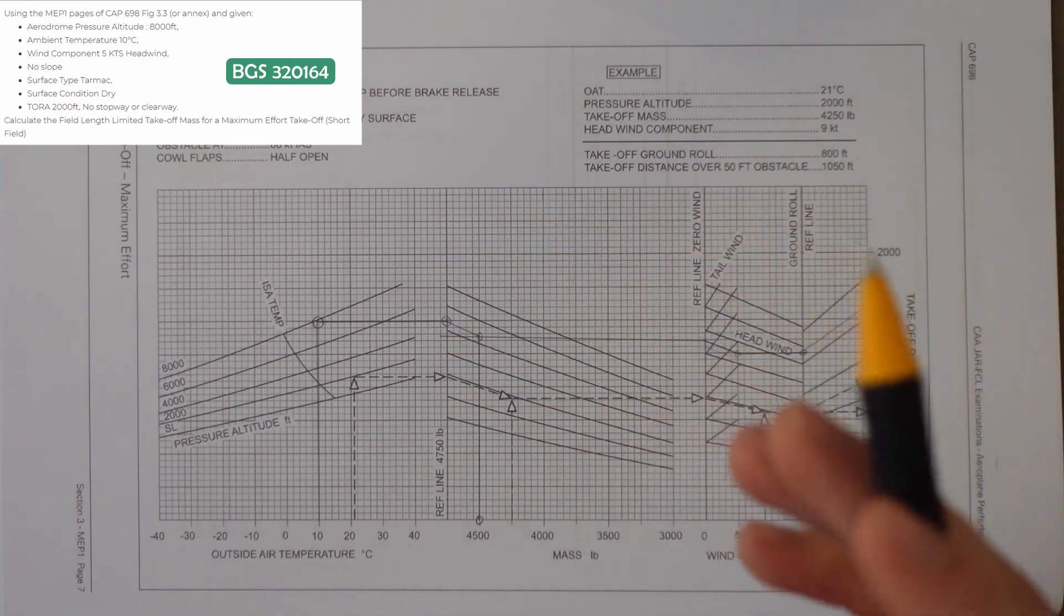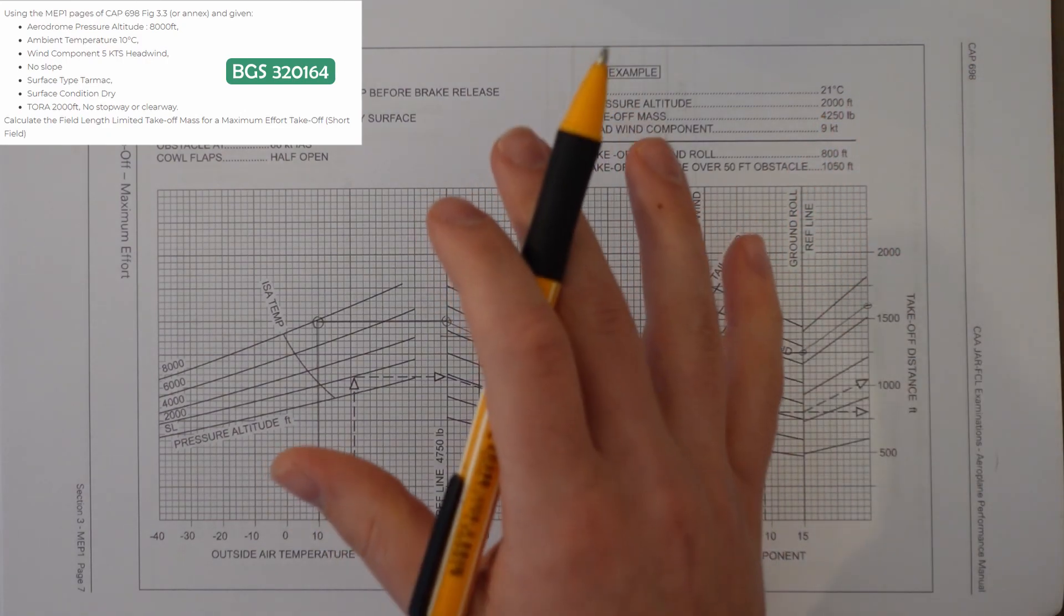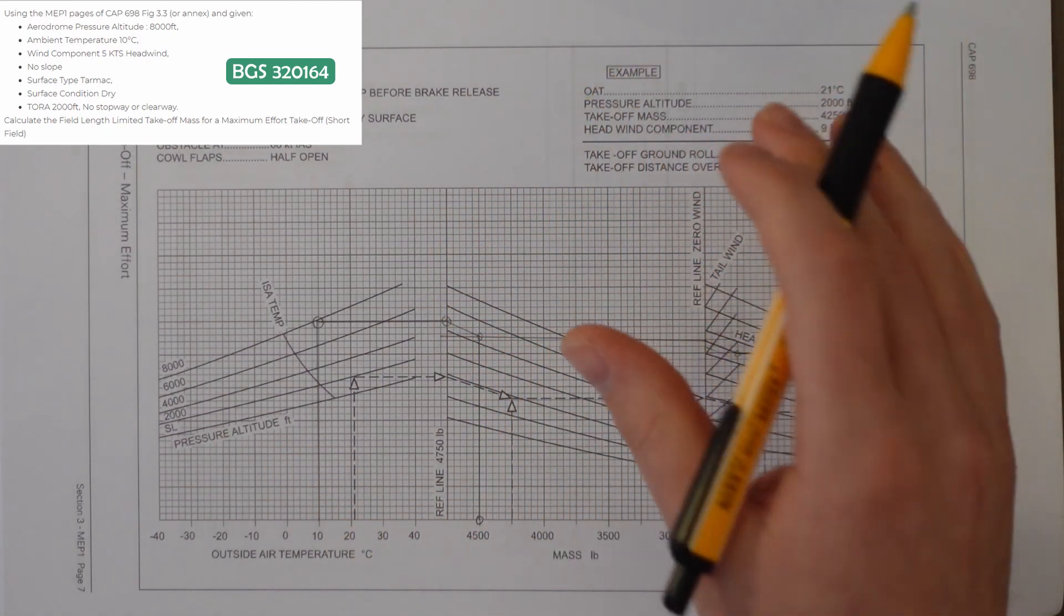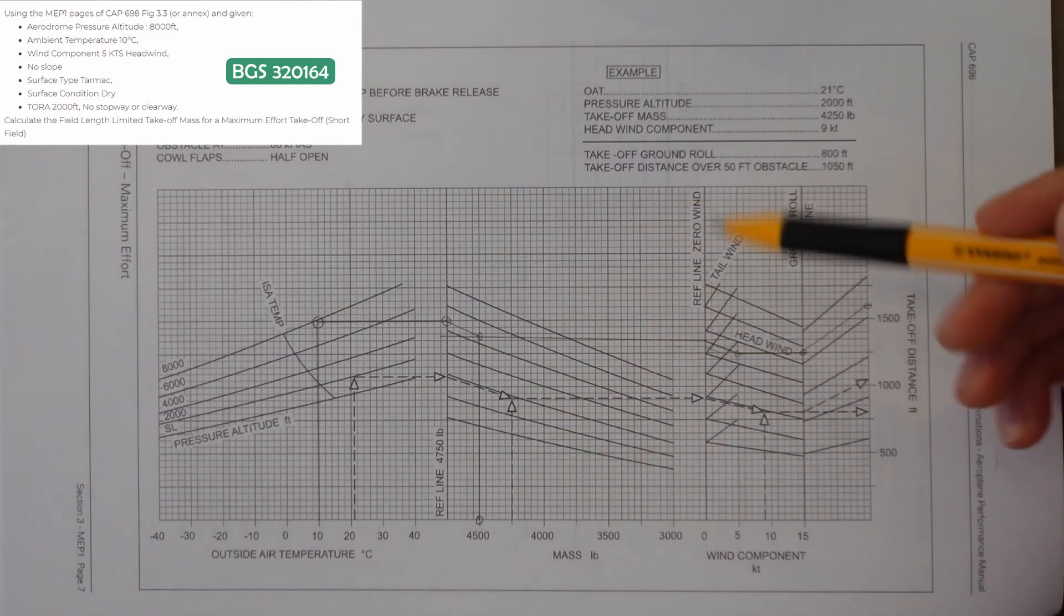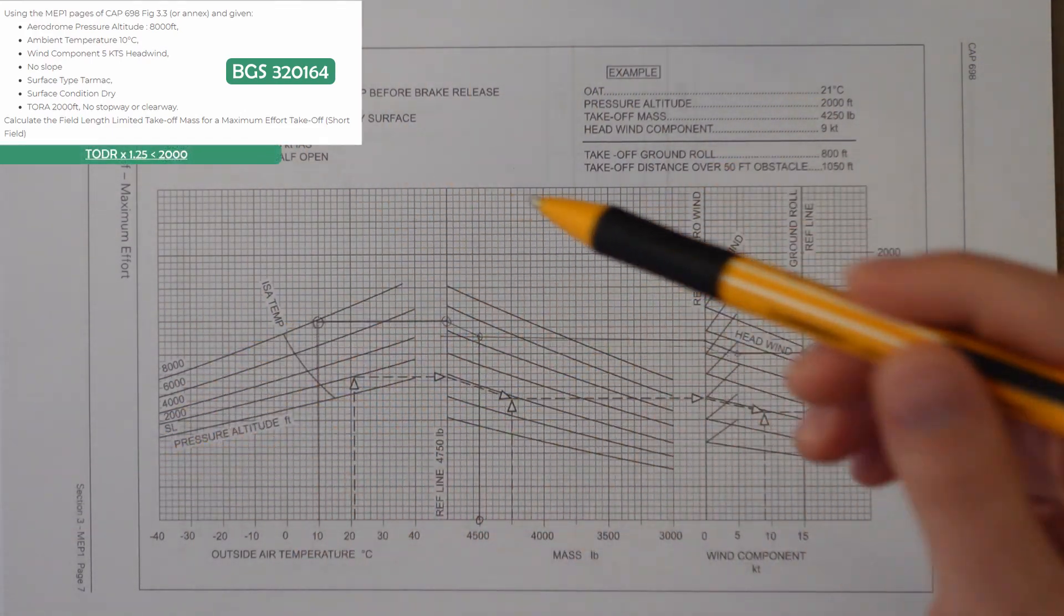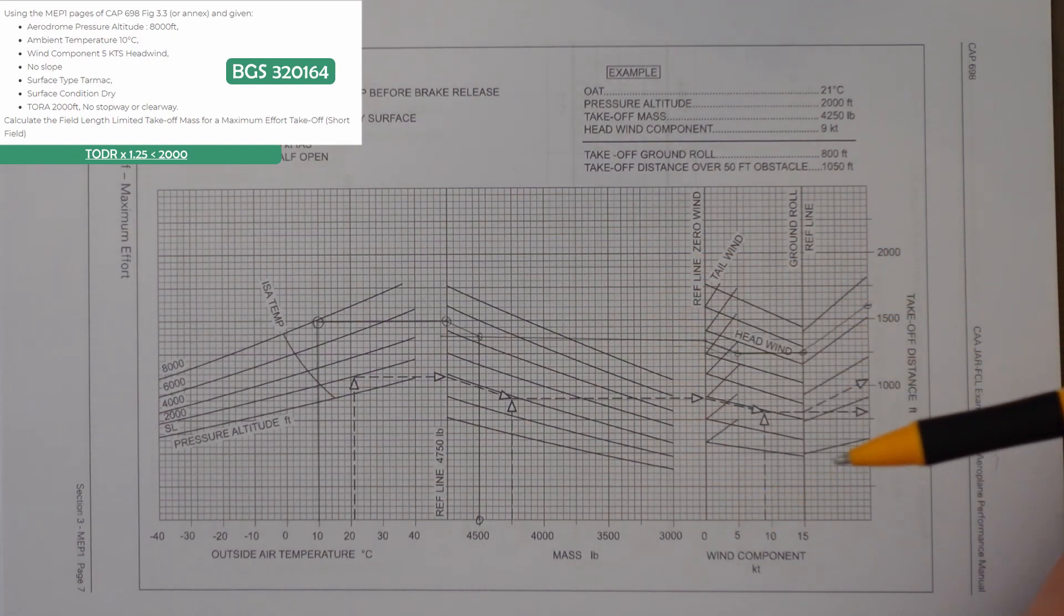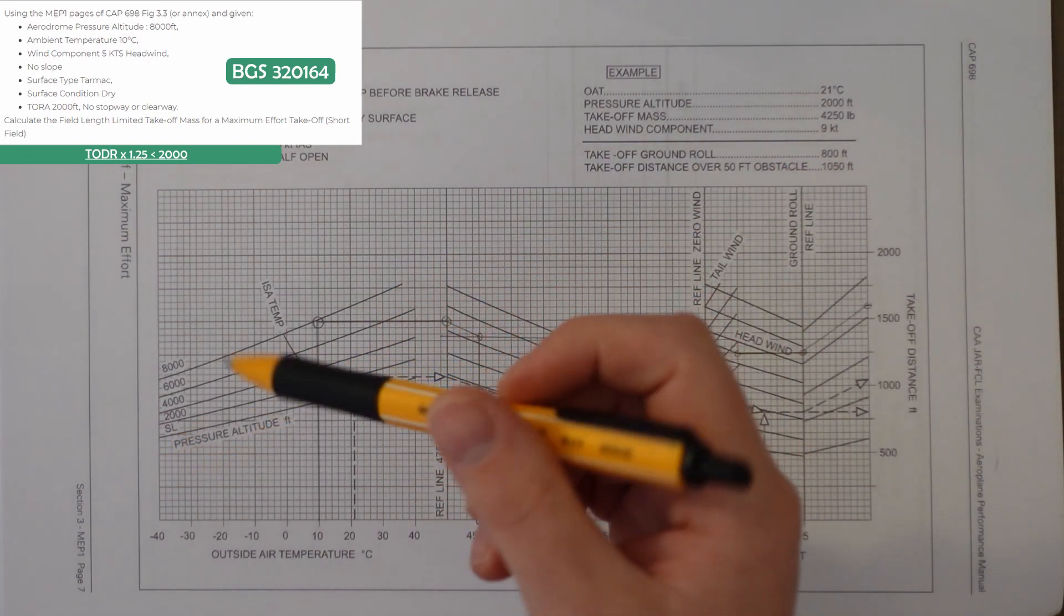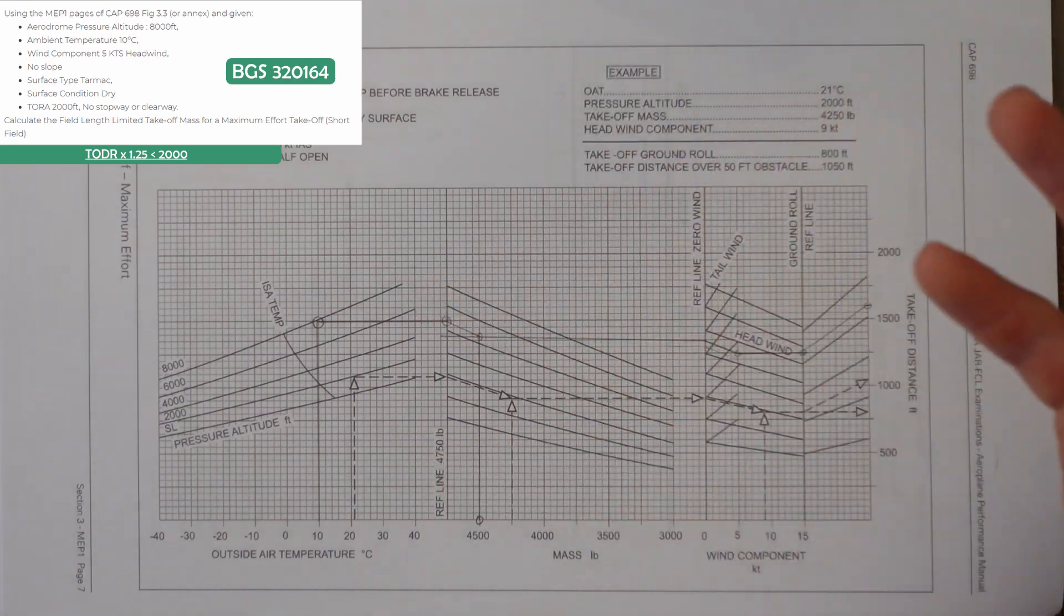If you remember, there is a different factor if we have no stopway or clearway. And if you don't remember, have a little look through the CAP 698 and you will see it. The biggest difference is there's only one factor. And it's the takeoff distance required times 1.25 has to be less than the takeoff run available.